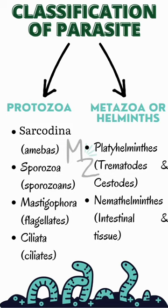Mastigophora, which includes Flagellates — for example, Giardia lamblia — and Ciliata, which includes Ciliates, for example, Balantidium coli. The Metazoa or Helminths are further classified into Platyhelminthes or Nematohelminthes.